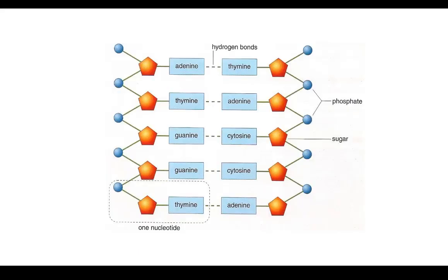Here we have the sugar phosphate backbone on either side. Then in the middle we have the bases which are drawn in these boxes, and down here at the bottom you can see one nucleotide which is made up of the phosphate, the sugar, and the base.